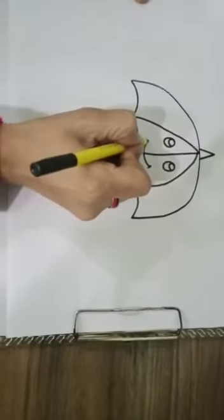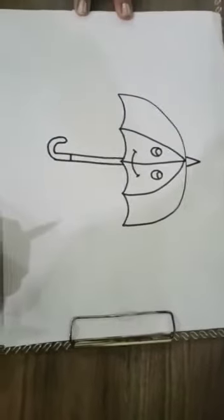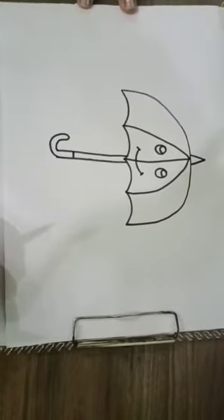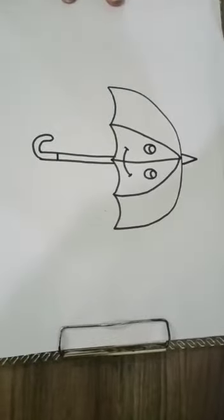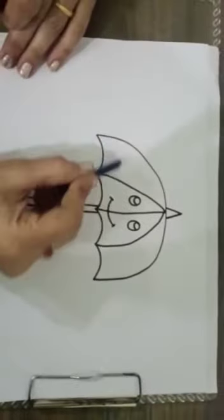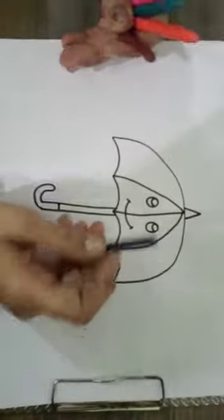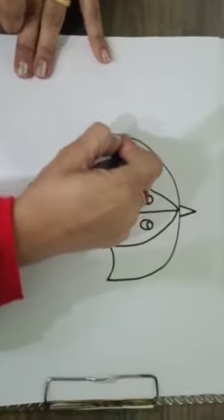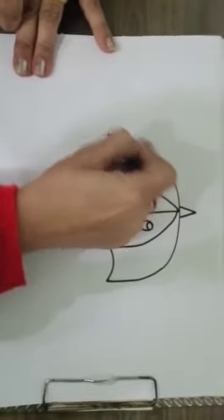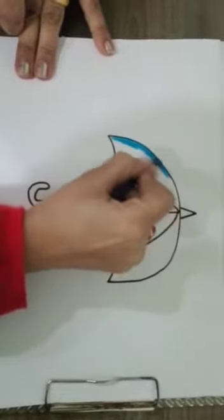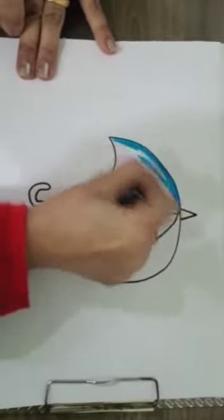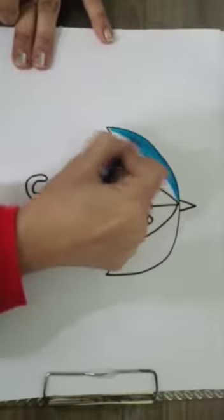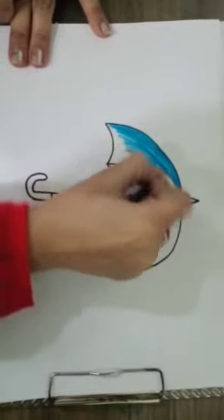So this is our umbrella. Now we will color it. Because we have four parts in this, we will make it multi-colored. In one part we will color it dark blue. See, coloring you know, we will make it completely neat, neat coloring. You have to make it outside and white space you have to leave.